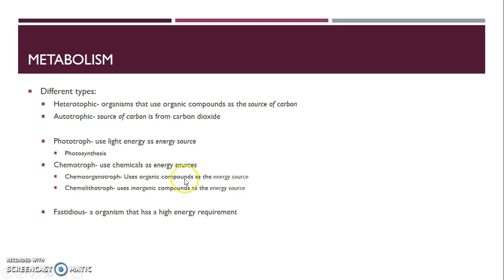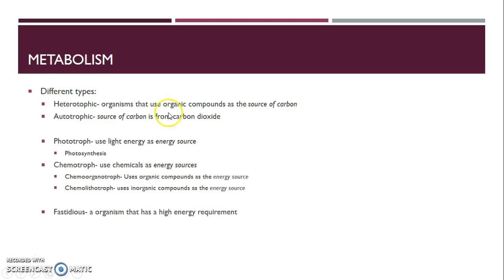And if you use chemicals as a source of energy, then you're a chemotroph. There are two different types of chemotrophs: chemoorganotrophs and chemolithotrophs. Chemoorganotrophs use organic compounds as their energy source, and chemolithotrophs use inorganic compounds. Humans are chemoorganotrophs and heterotrophs — we use organic compounds as both an energy source and a carbon source.